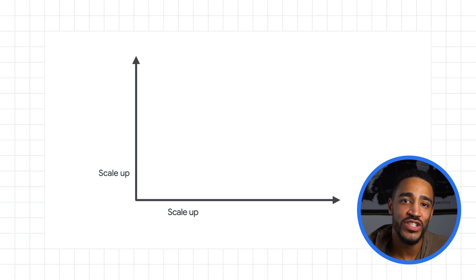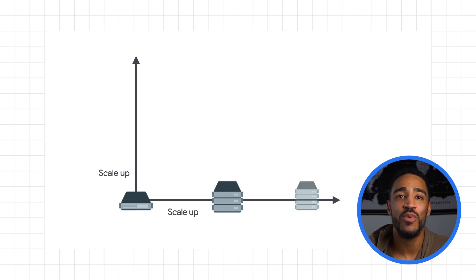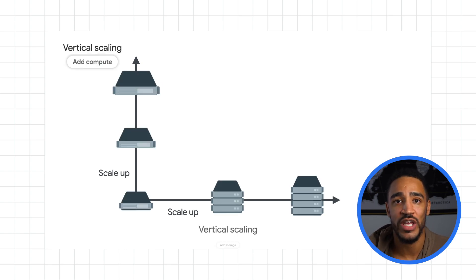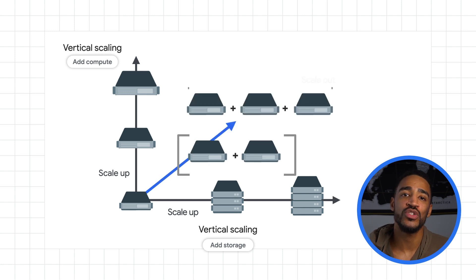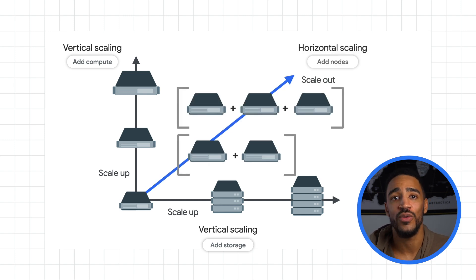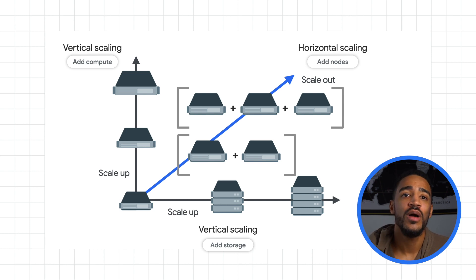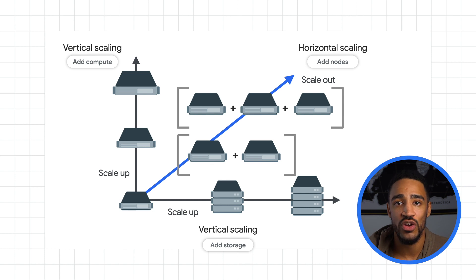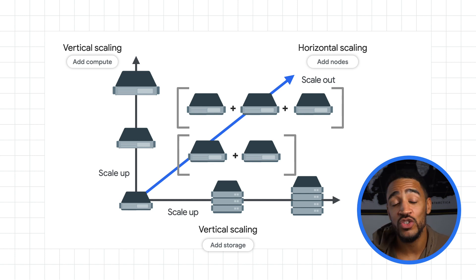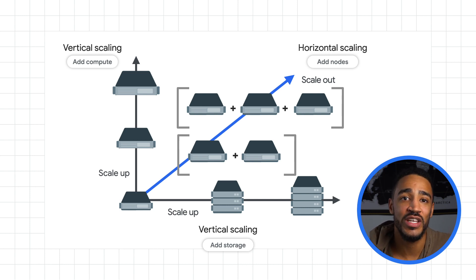Cluster Autoscaler and Horizontal Pod Autoscaling are both examples of horizontal scaling, or scaling out, which means they focus on adding more total resources for the application to use as a whole. But sometimes it's necessary to scale vertically, or scaling up, by modifying the resources provisioned to an individual service — like if a pod doesn't have enough CPU, or if it has too much RAM.